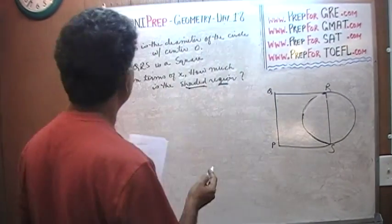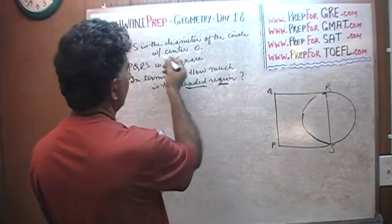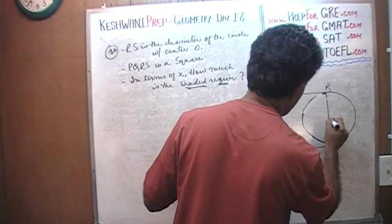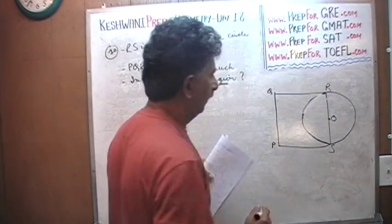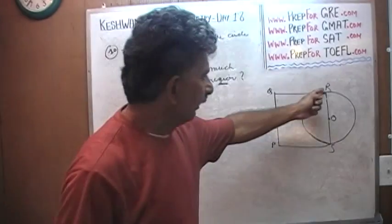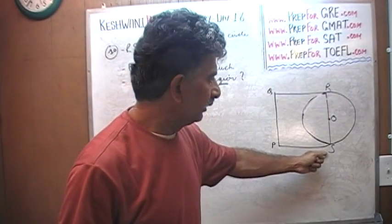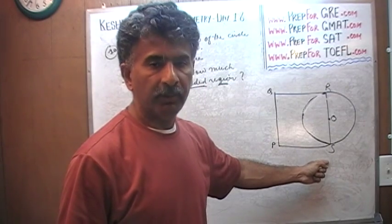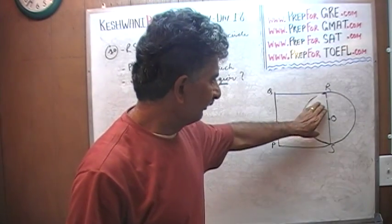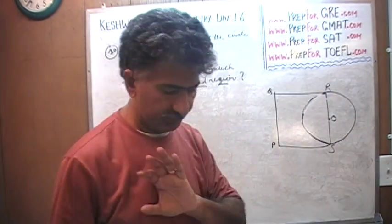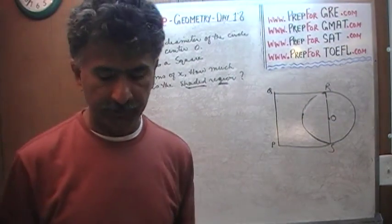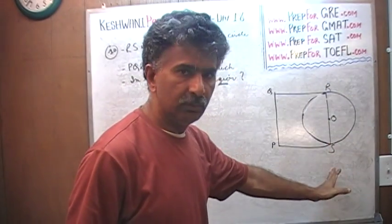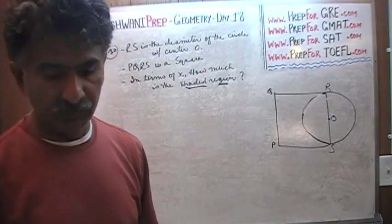We are told that RS is the diameter of the circle with center O. Here is the center O. What you have to understand is that if RS is the diameter, then by definition, whenever you draw a diameter inside the circle, you are cutting the circle into two halves. This is half the circle and this is the other half. They do not have to say that — you have to understand that. We just cut it by drawing a diameter across it going through the center.